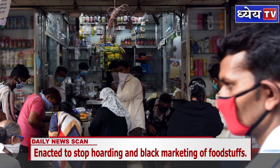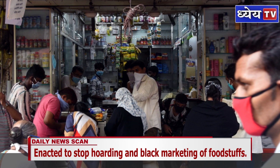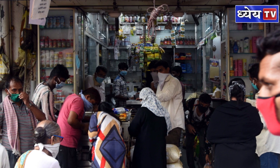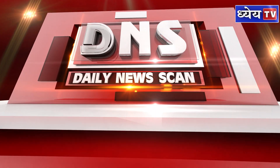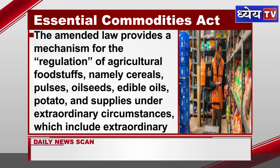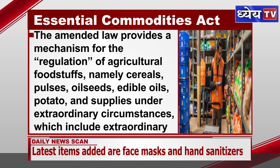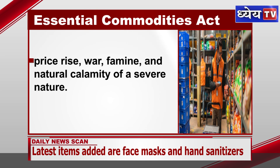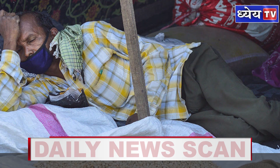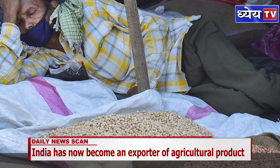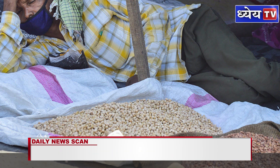As per the Ministry of Consumer Affairs, Food and Public Distribution, the ordinance has introduced a new subsection 1A in Section 3 of the Essential Commodities Act 1955. The amended law provides a mechanism for the regulation of agricultural foodstuffs — namely cereals, pulses, oilseeds, edible oils, and potatoes — under extraordinary circumstances, which include extraordinary price rise, war, famine, and natural calamity of a severe nature. Under the amended Act, agri-foodstuffs can only be regulated under such extraordinary circumstances.